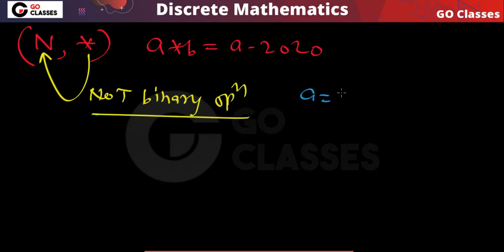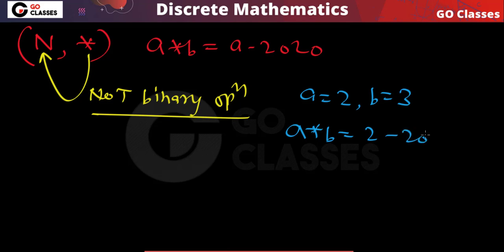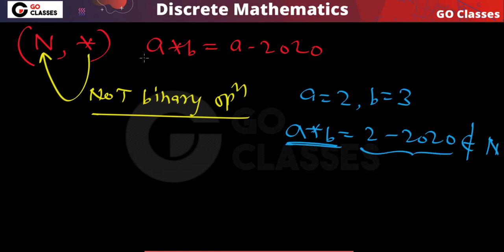For example, if I take a equal to 2 and b equal to 3, then a star b will be 2 minus 2020, and you can notice this is not a natural number — it is not in our base set. So I can say that this operation is not a binary operation on the set of natural numbers.